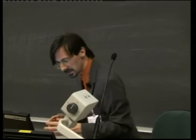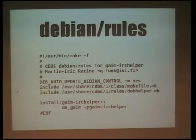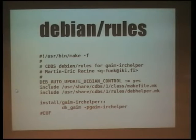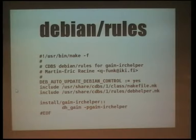Now we get to the core of the building part: the rules file. In this case, since I've used CDBS, the only things I need are those two includes — I'm using a makefile as noticed earlier in the content of the package — and to actually build the package and wrap it up I need debhelper so I'm including that as well. The only small addition is that since this is a gaim plugin there is a separate helper for that which comes with gaim-dev. Basically this is all I need from the first three files to end up with a Debian package based on that tarball I downloaded.